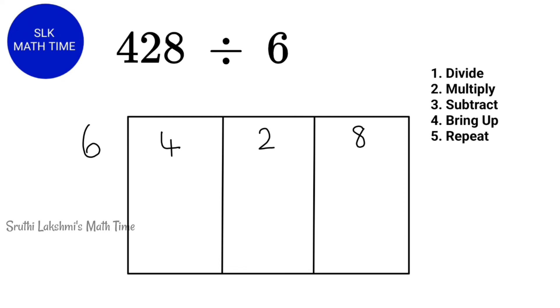So, we are going to write 0 over here. 6 times 0 is obviously 0. So, 4 minus 0 is 4. And next, we bring up the 4 over here. So, 42.